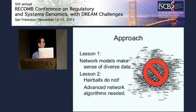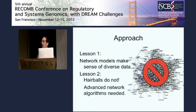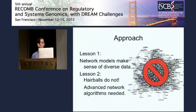So we need to use advanced network algorithms to avoid getting these hairball diagrams and get networks that allow us to actually design experiments, because that's ultimately the goal. These are the first two important points I want you to take away: network models are the way to integrate these data, but we cannot make any use of just hairball diagrams.